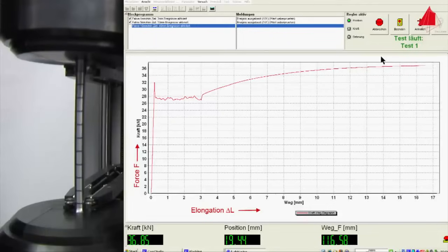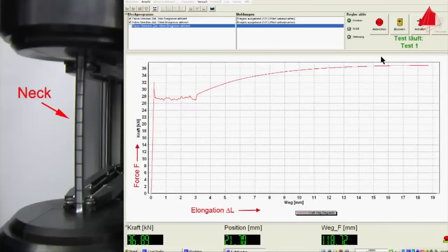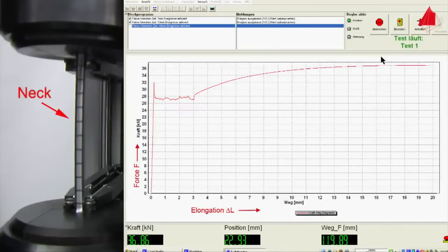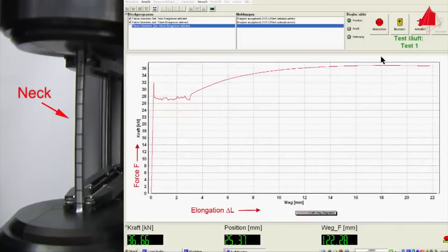As soon as the maximum force is reached, a neck begins to form at one point of the test piece. All further plastic deformation now only takes place at the neck, and eventually the test piece fractures there.